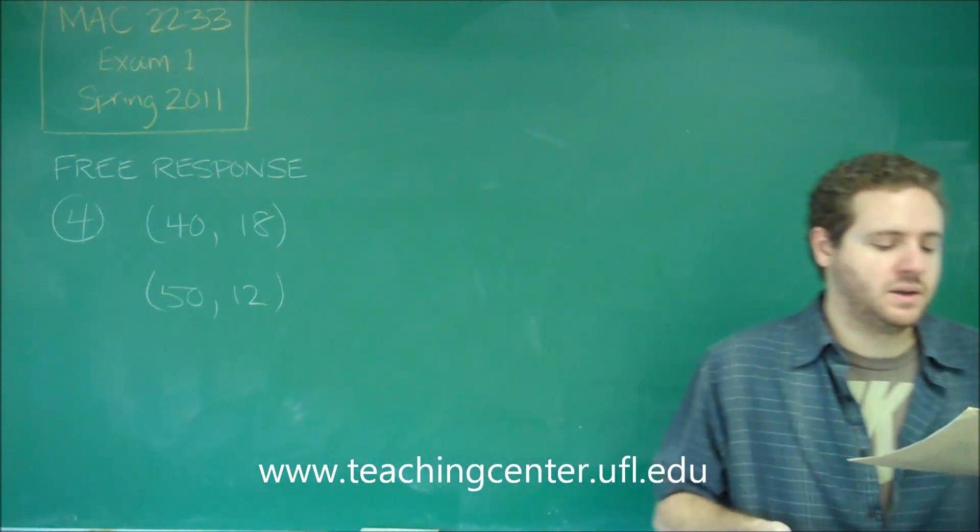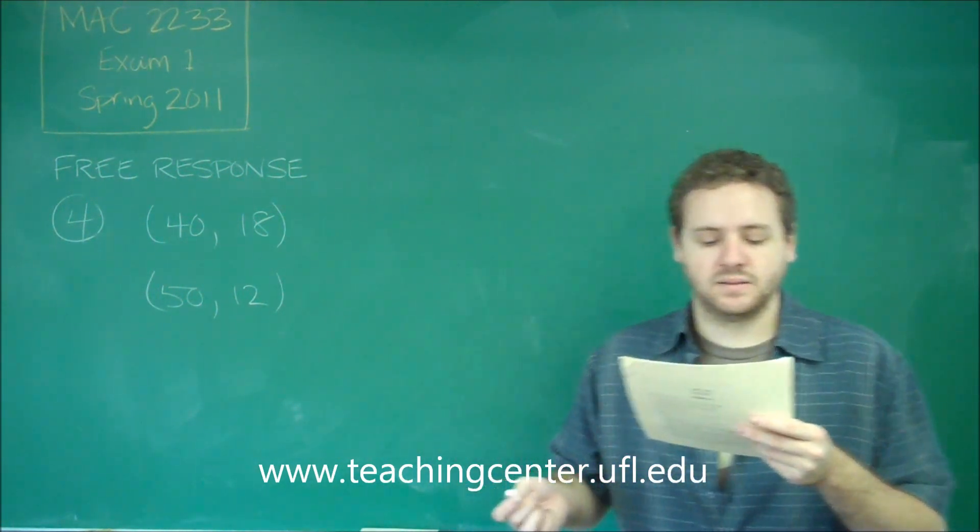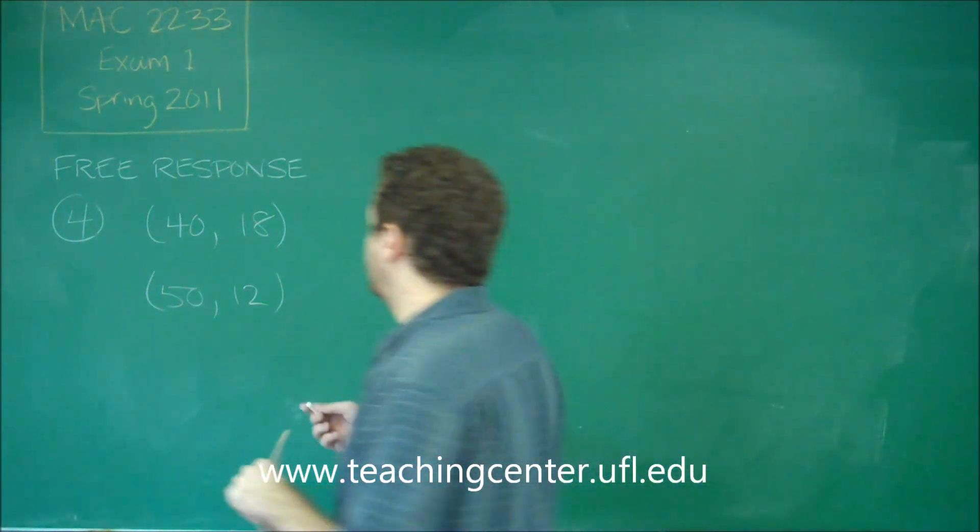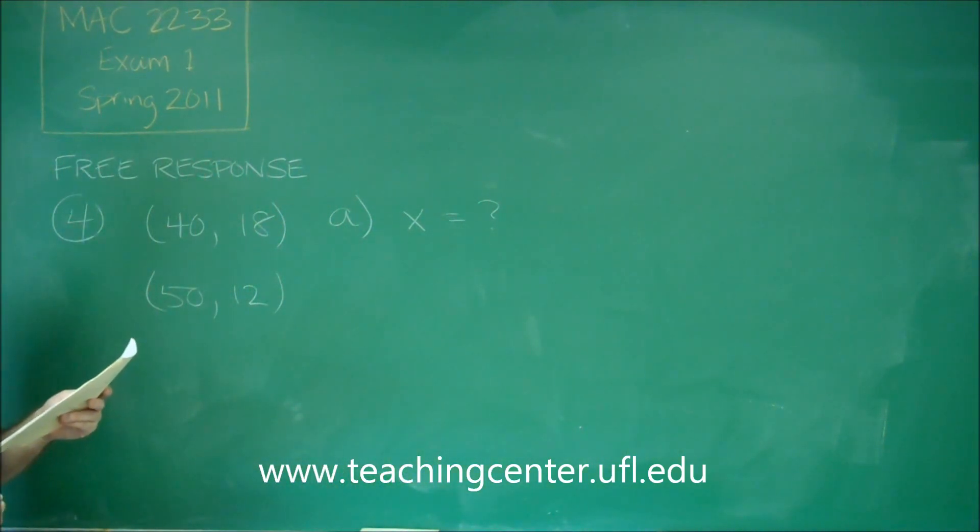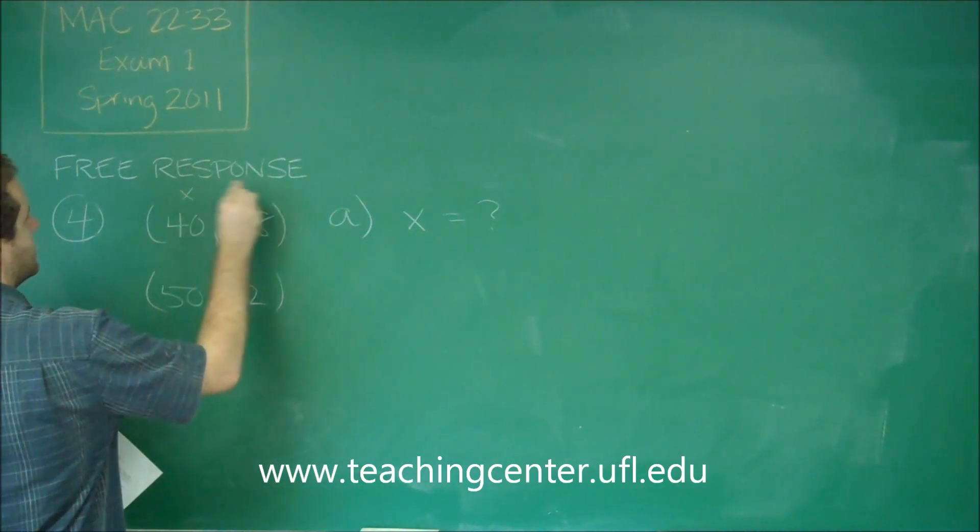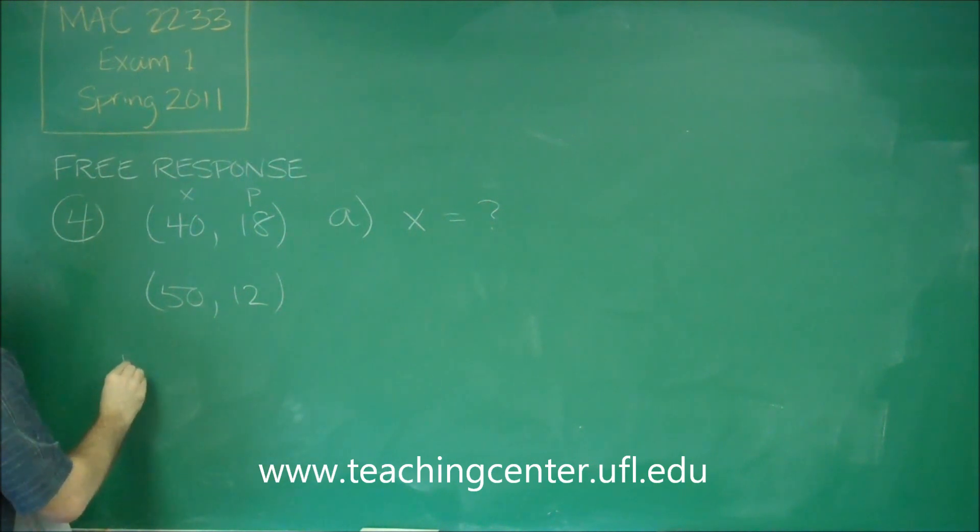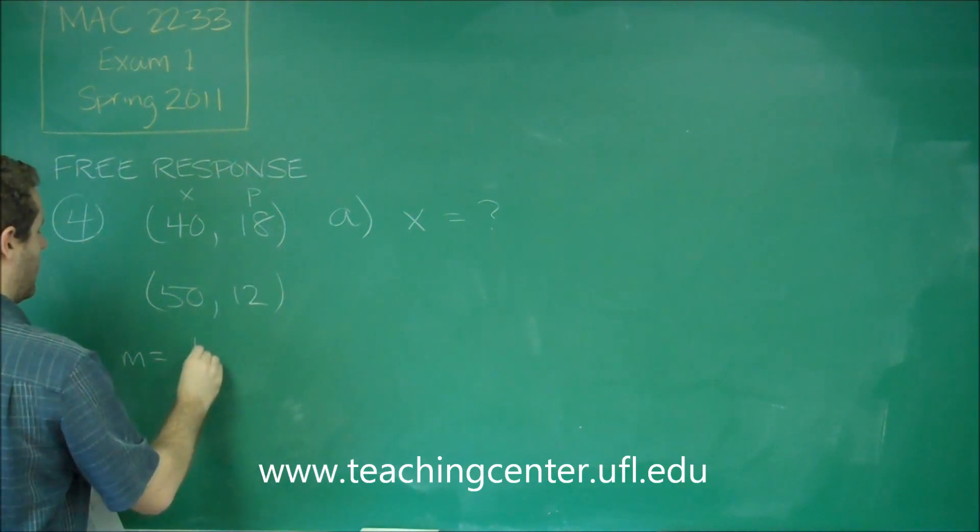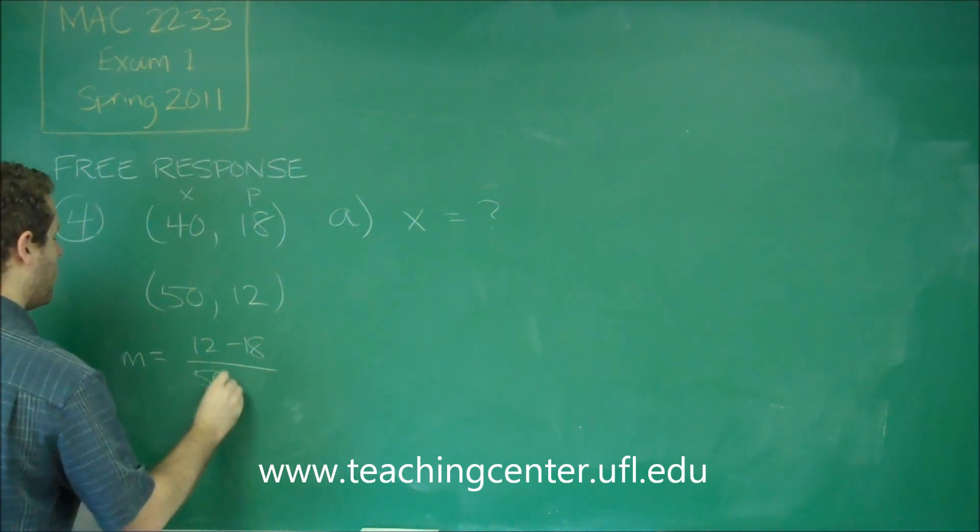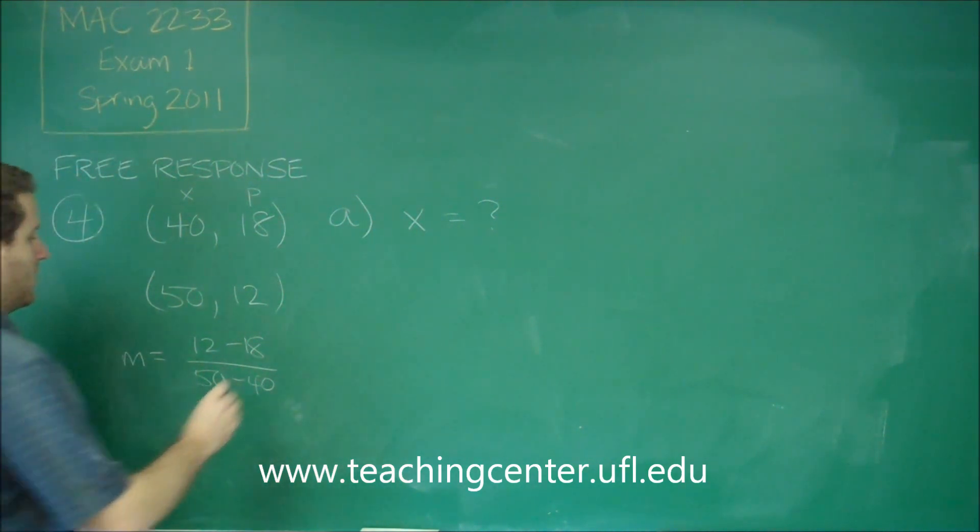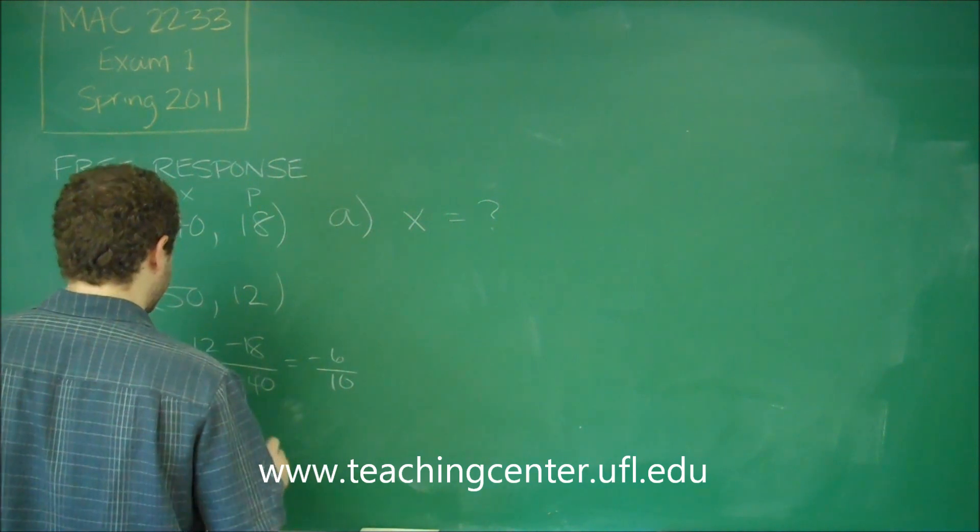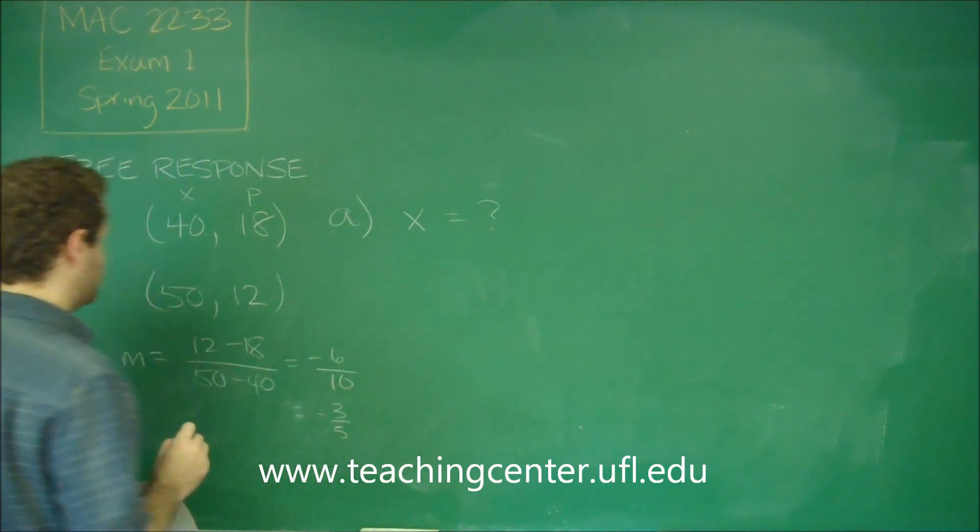We want to find in part A a linear model expressing this demand X as a function of P. So for part A, we want X equals what? Let's figure out what this is. This is a linear function here. We have two points. We can figure out the slope. Remember that these are X, P. So our M here is 12 minus 18 over 50 minus 40. If you do Y2 minus Y1 over X2 minus X1, we get negative 6 over 10. In other words, negative 3 fifths. That's our slope.